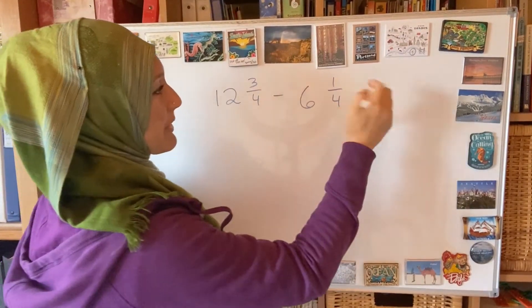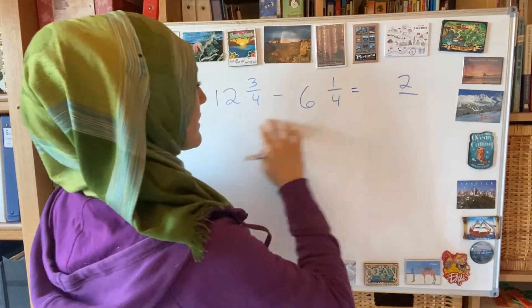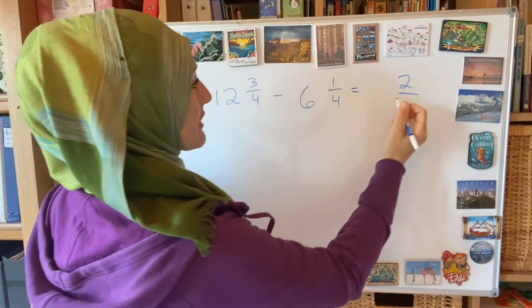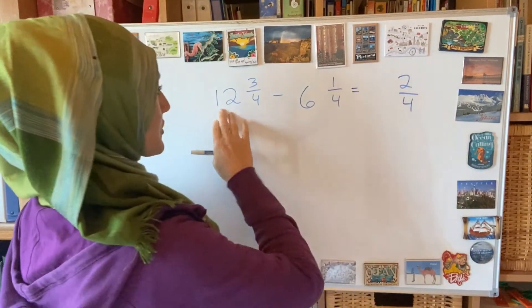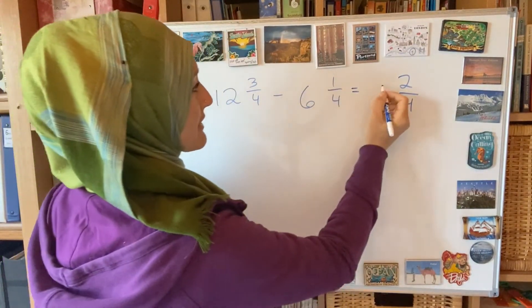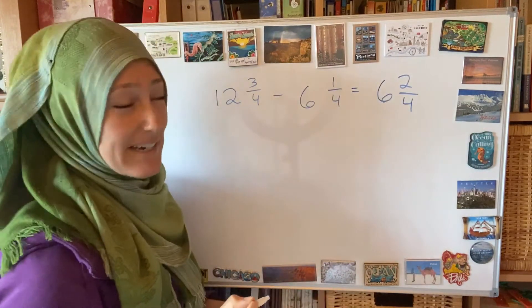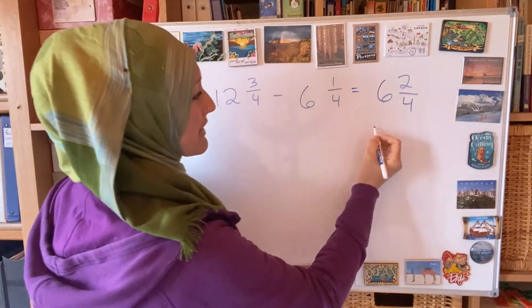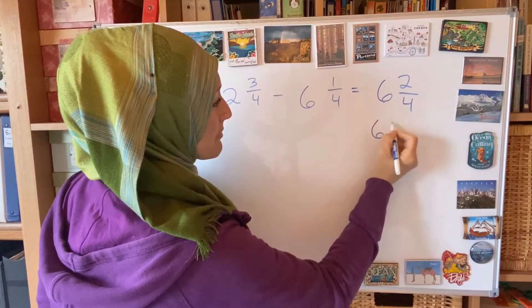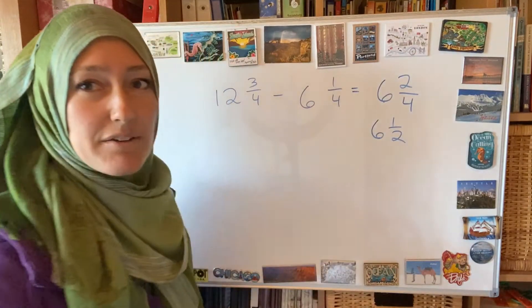Pause it and try it. 3 minus 1 is 2, the denominator is 4, and 12 minus 6 is 6. But then you need to reduce this, so it's going to be 6 and a half.